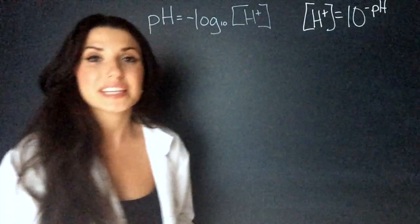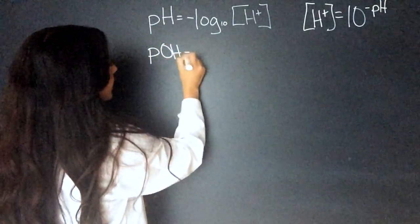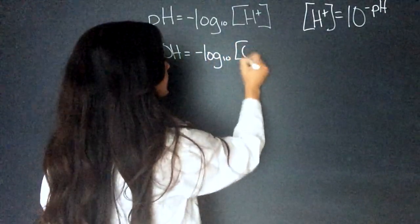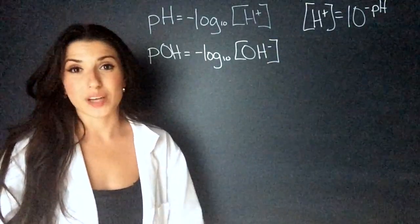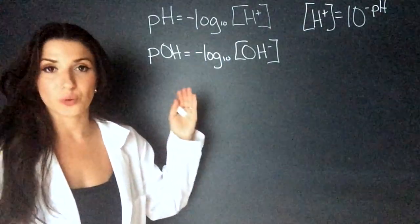Now we can do this exact same thing for pOH. pOH equals the negative log, but this time, of hydroxide ions. For example, if a question only gives us the concentration of the hydroxide ions, we're able to find pOH.